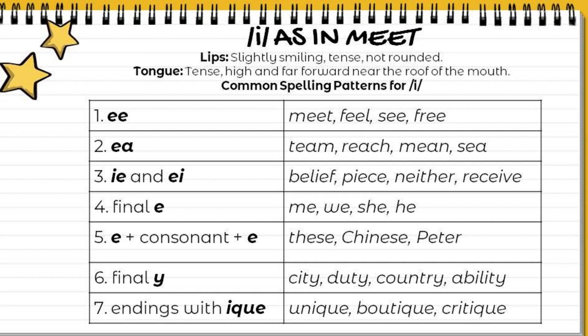The common spelling patterns for this sound are: double E as in meat, feel, see, and free. EA as in team, reach, mean, and sea.